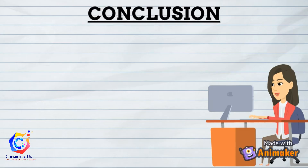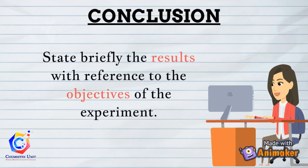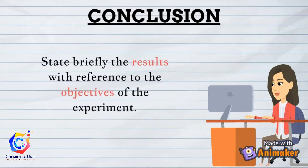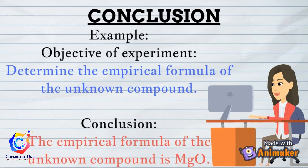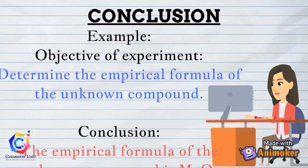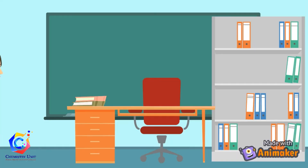In making the conclusion, you should state briefly the results with reference to the objectives of the experiment. For example, if the objective of the experiment is to determine the empirical formula of an unknown compound, you may make a conclusion to state the results of the required empirical formula.